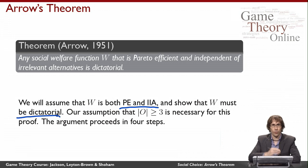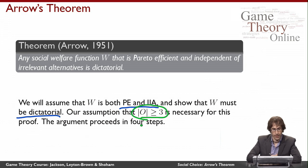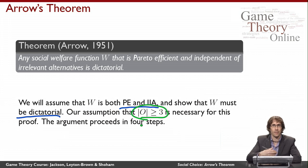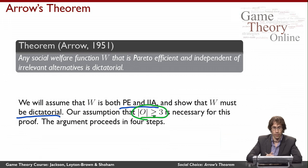To avoid sweeping this under the rug, let me remind you that we've assumed the number of outcomes is at least three. That's important for this proof. Really, independence of irrelevant alternatives doesn't mean anything in the case of only two outcomes — there can't be an irrelevant alternative if there are only two things to compare. So we'll need to make use of the fact that there are at least three outcomes, as you'll see in the proof.